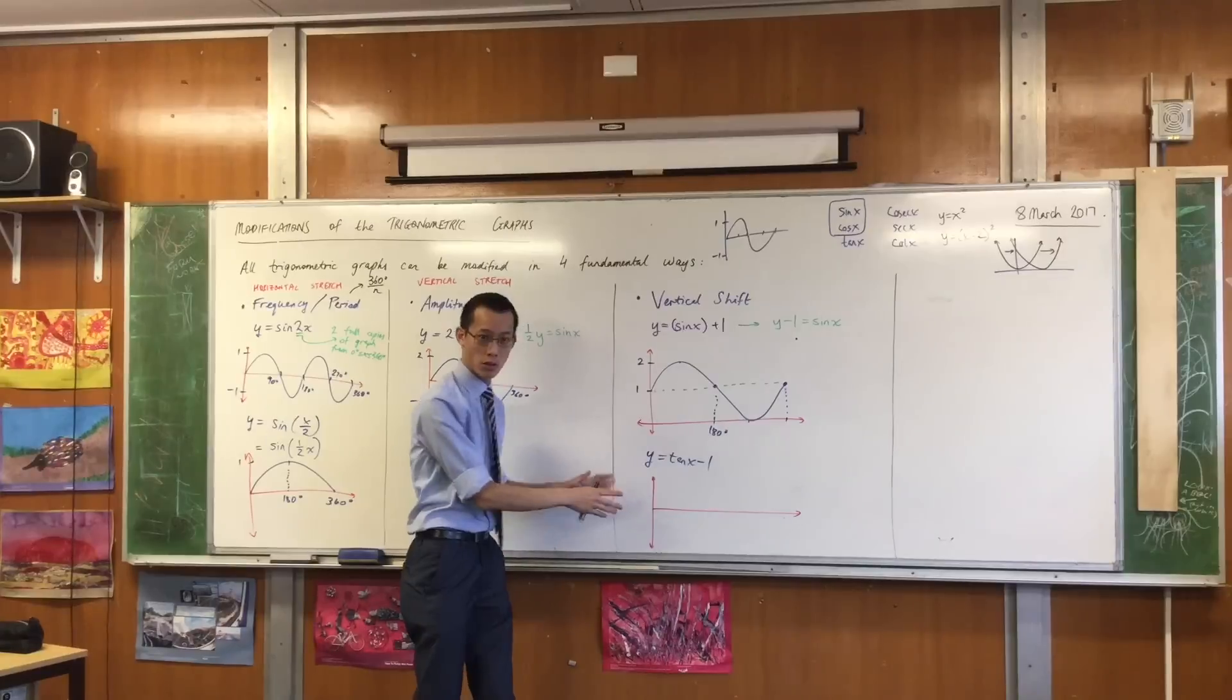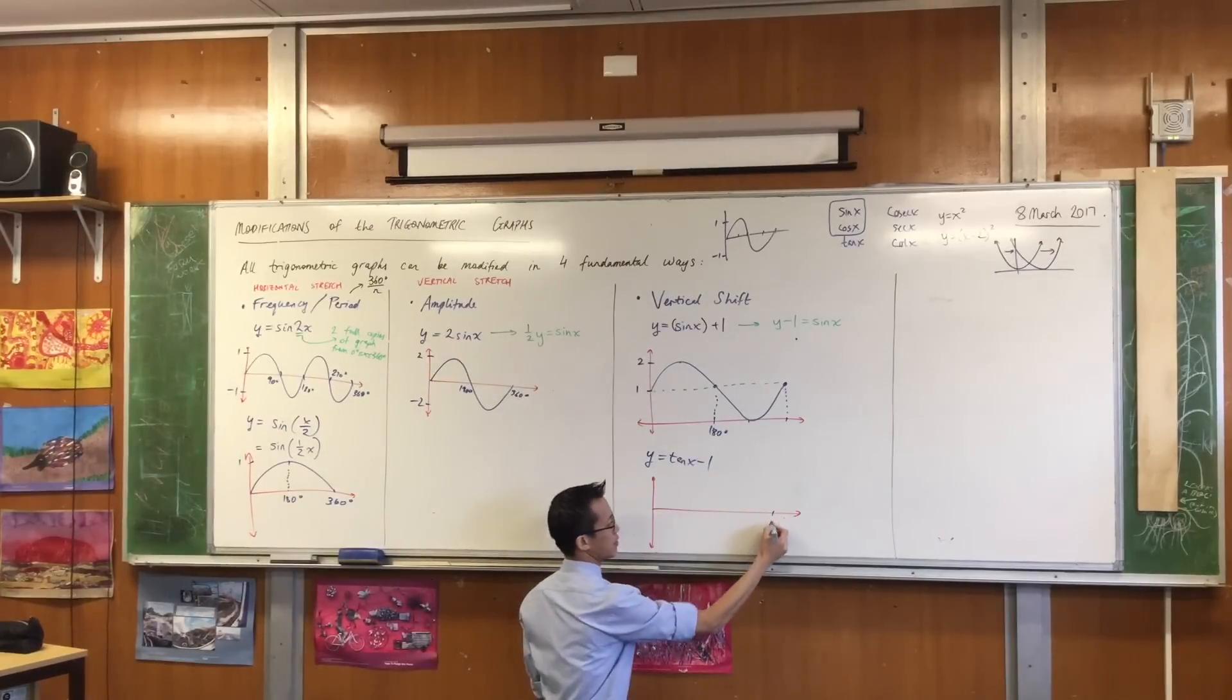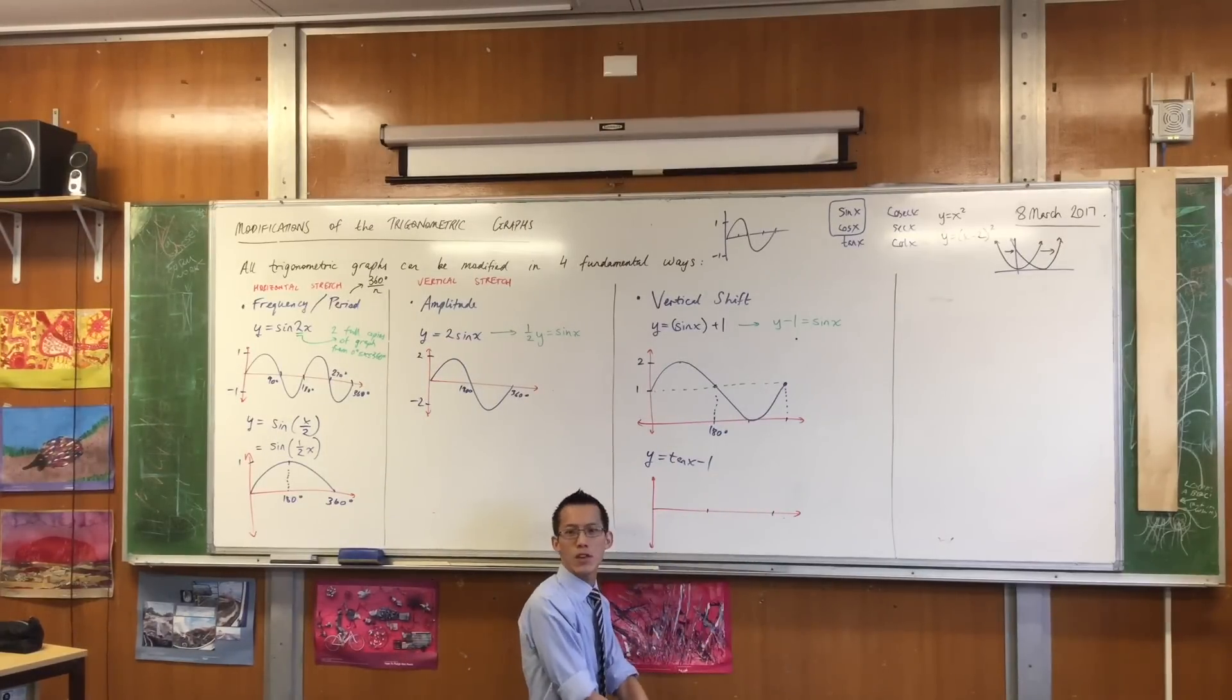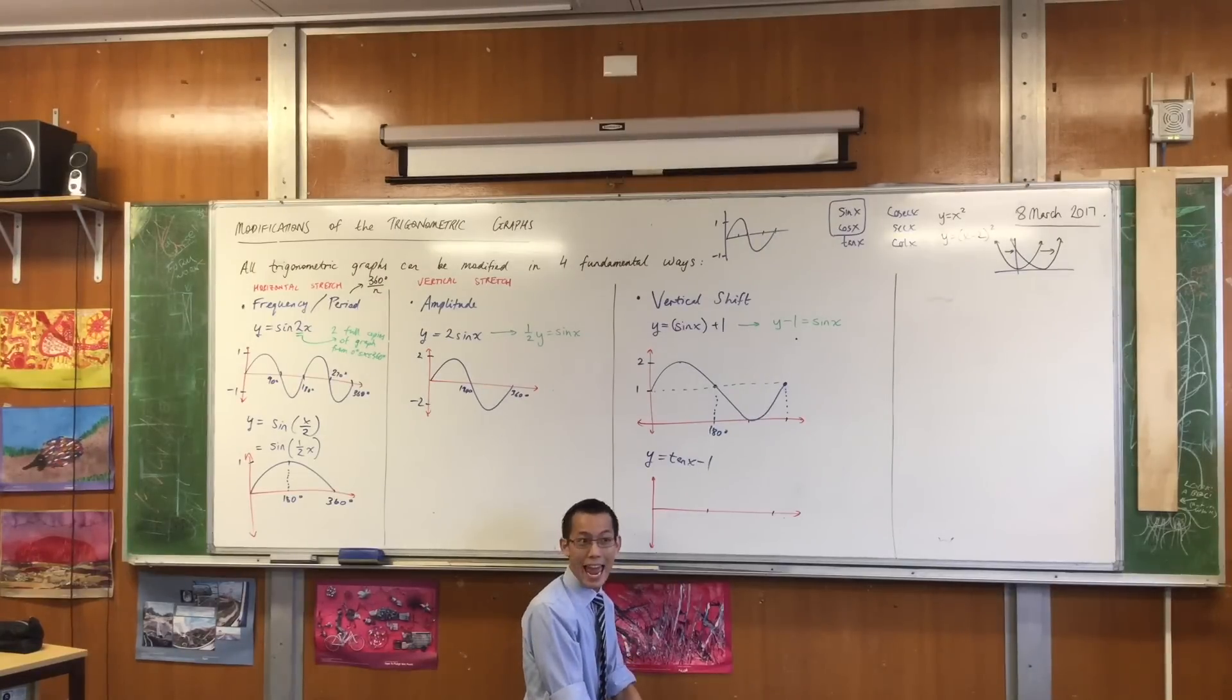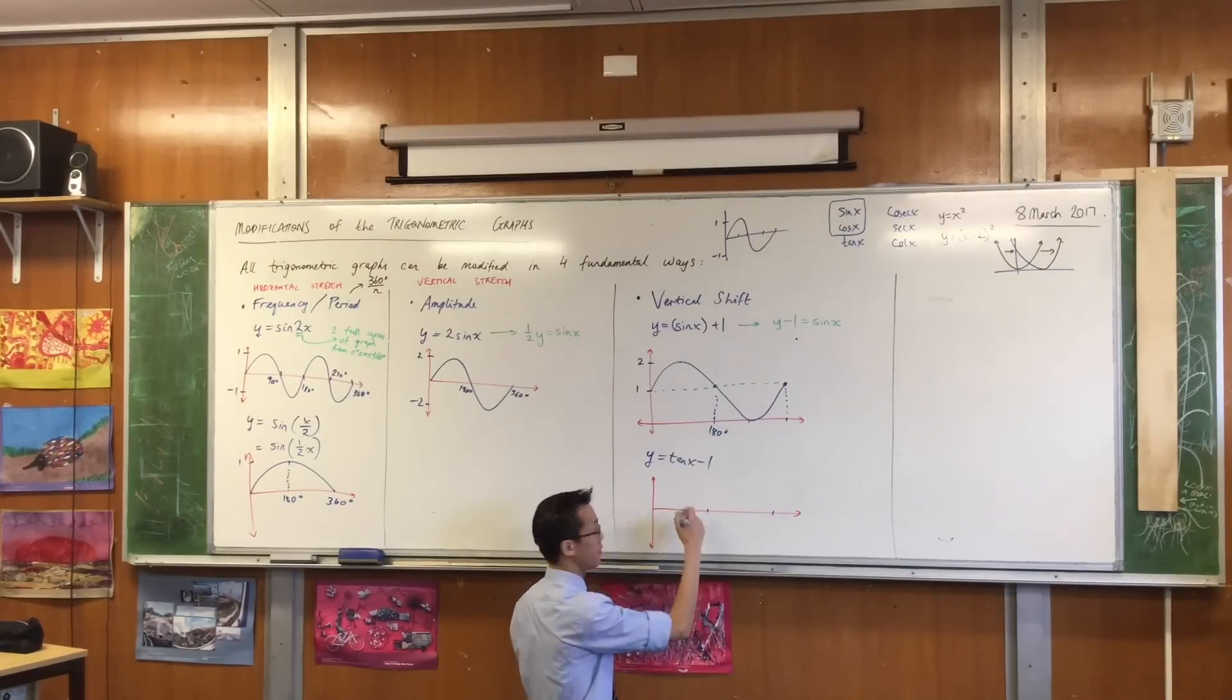So first, let's draw those on, because they're easy to identify. If you've got 0, 360, 180, where do those vertical asymptotes go again? 90. 90 and? 270. 270. Let's draw those in first.